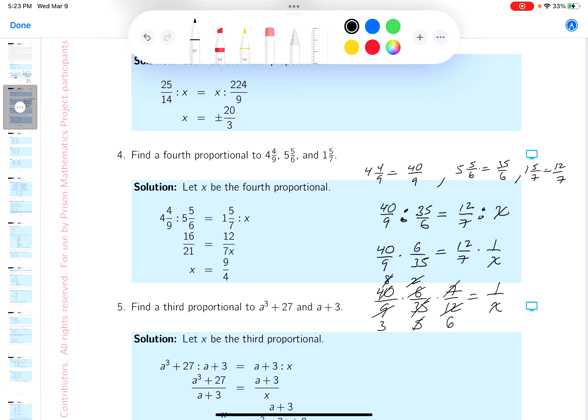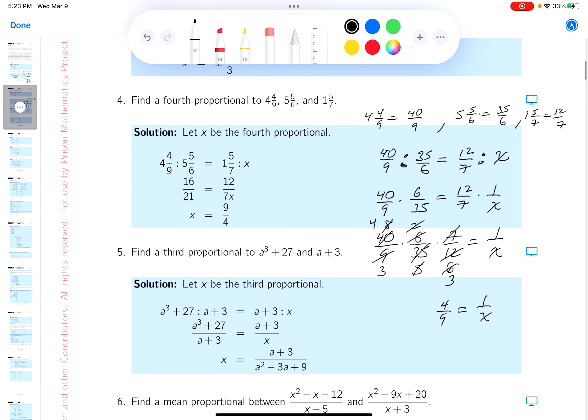2 goes into 8, 4 times, and it goes into 6, 3 times. That's a lot of work. What do you get there? You get 4 ninths equals 1 over x, which means x equals 9 quarters.